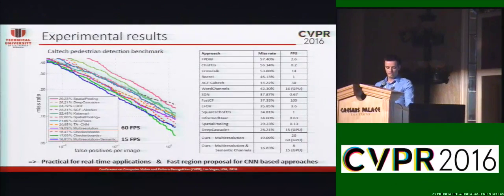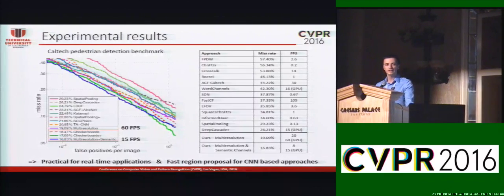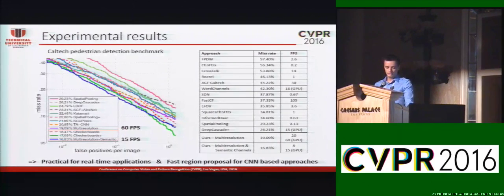For validation, we used the Caltech pedestrian detection benchmark. We achieved a log-average miss rate of 90% at 60 frames per second using only multi-resolution filter channels, and less than 70% using also semantic channels. Due to the fast execution time, it is a very practical solution for real-time applications.